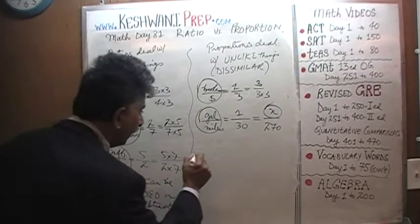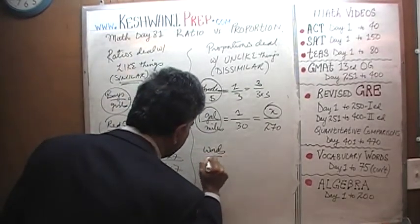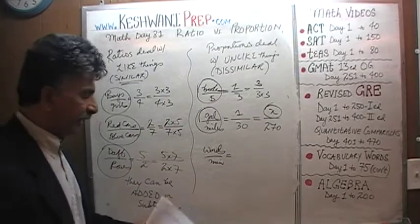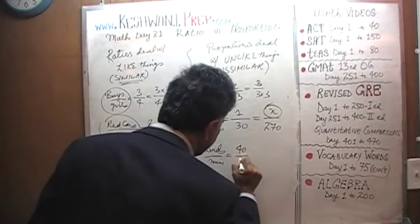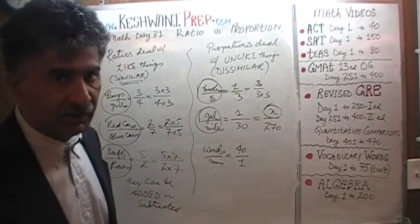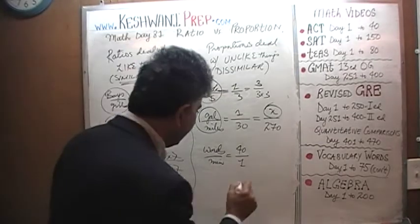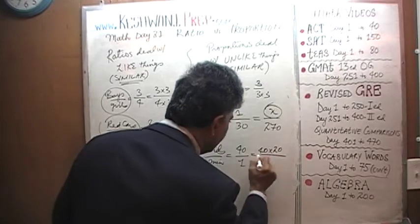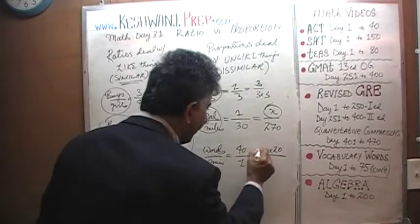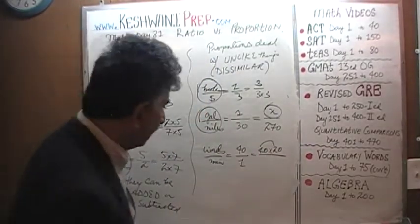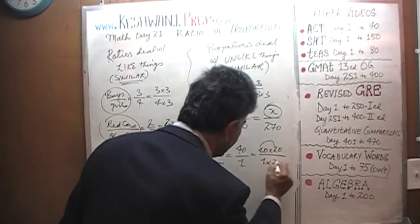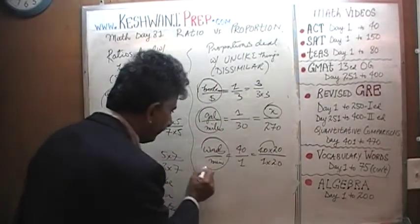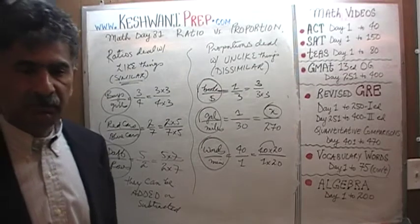Or we might talk about words per minute. If we are told that a person can type 40 words per minute, it's perfectly normal to ask: how long will it take to type 800 words? The answer, of course, is 20 minutes. Again, the point is that we are dealing with words and minutes.